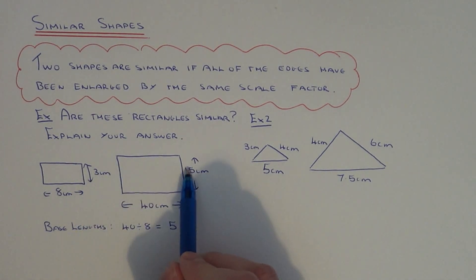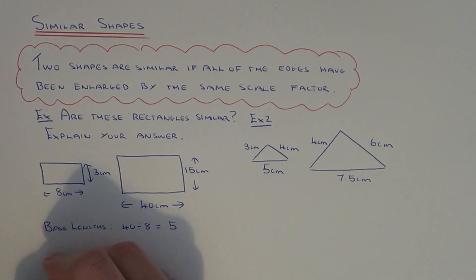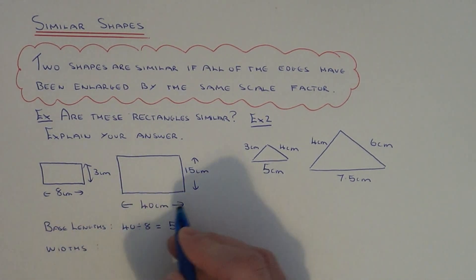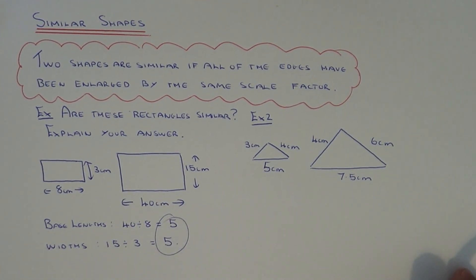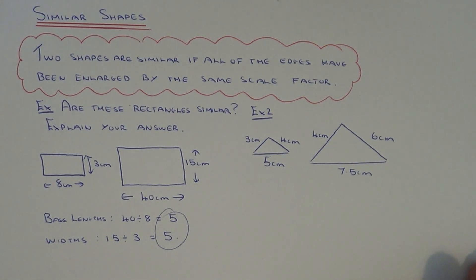Let's do the same for the widths of the rectangle. 15 divided by 3 gives us 5. So the base length has been enlarged by 5 and so has the width of each rectangle. Since these scale factors are the same, these would be similar shapes.